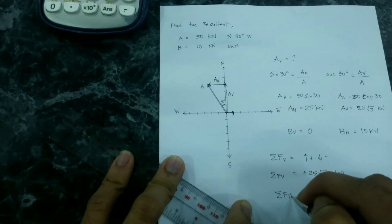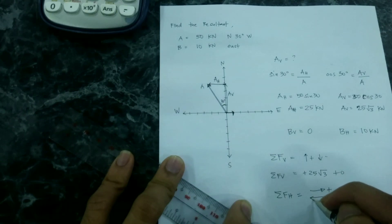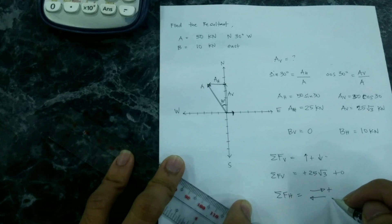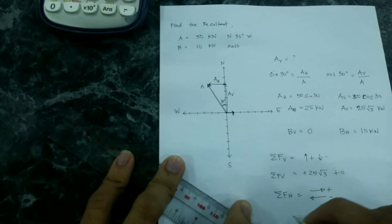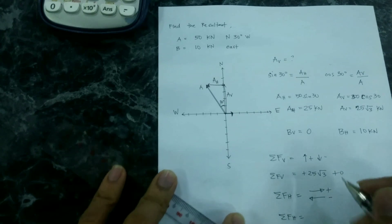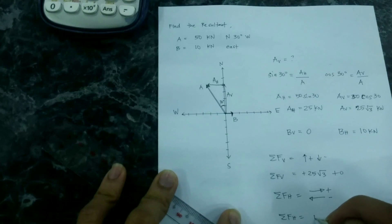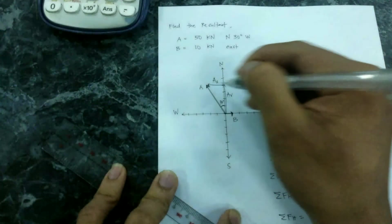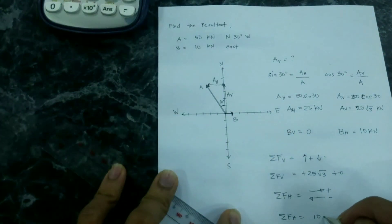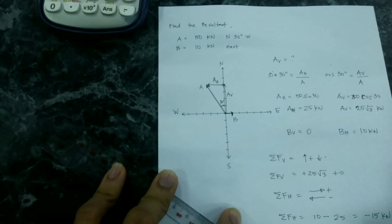The summation of horizontal forces: forces going to the east are positive and forces going to the west are negative. So the summation of horizontal forces equals positive 10 (from B) minus the horizontal component of A, which is 25. This equals negative 15 kN.